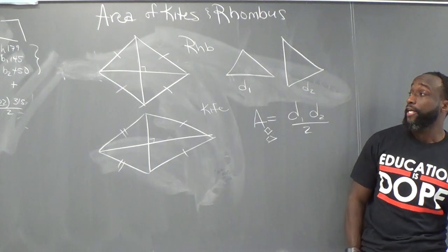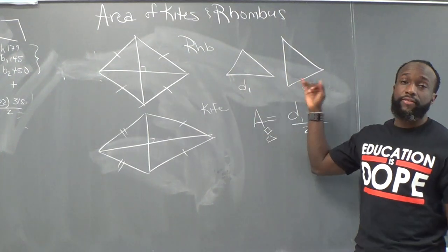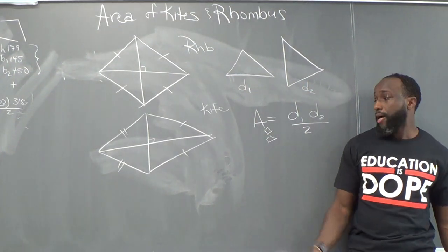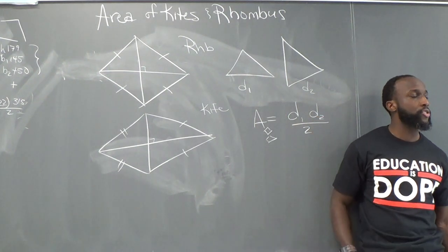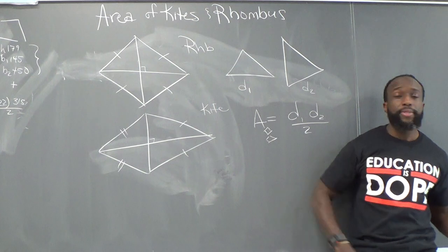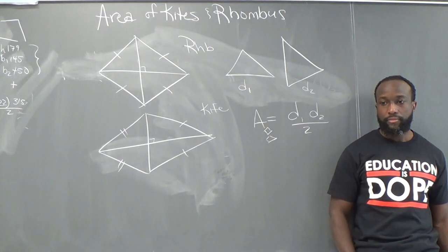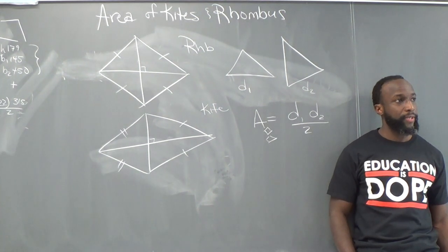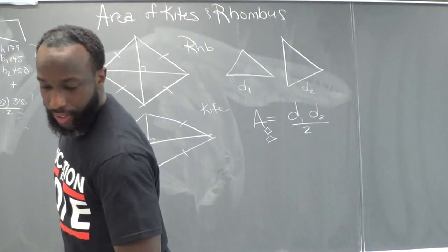So that's your formula. Okay? So if you're given the measure of the diagonals, you could multiply them and divide by 2 and you have your area. And that's the same for both shapes, the rhombus and the kite. We good? Alright, let's do an example then.